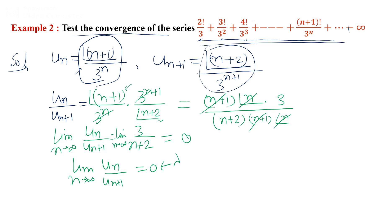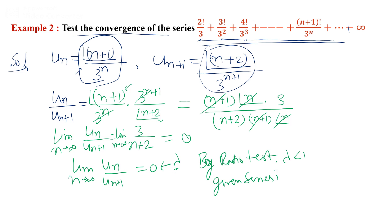So lambda = 0, which is less than 1. By the ratio test, the given series is divergent.